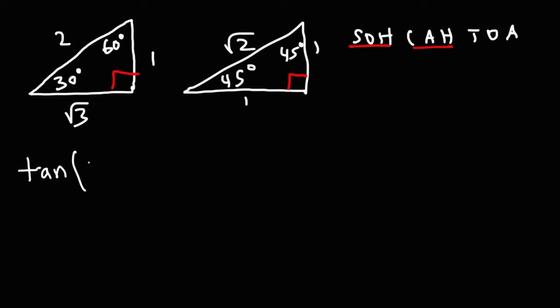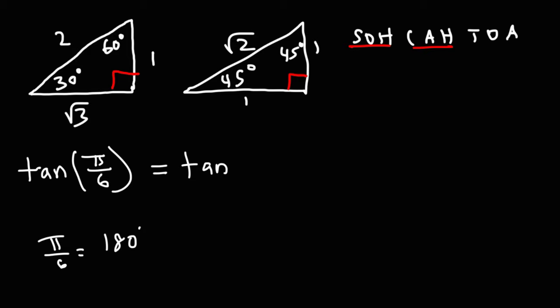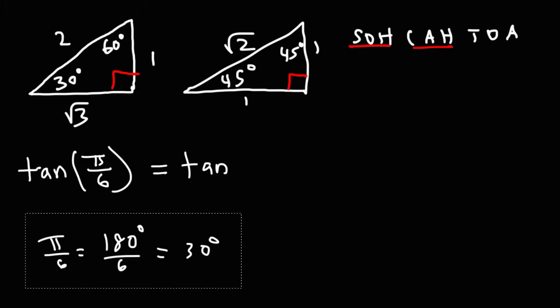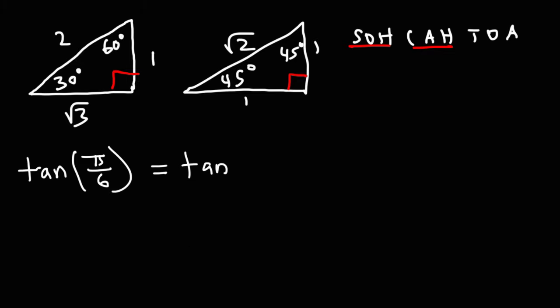Now let's try tangent of π over 6. Converting from radians to degrees: replace π with 180, so π over 6 is 180 divided by 6, which is 30 degrees.